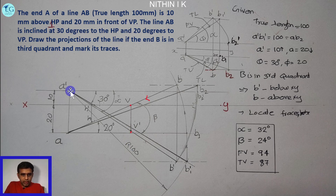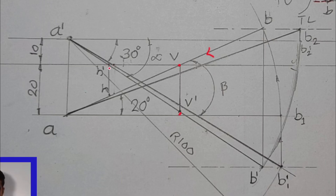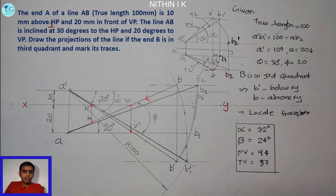A-dash, B-dash is extended to cross the XY line, giving H-dash. This point is H-dash. H-dash corresponds to the horizontal trace H. Then project down to the top view line A-B2 to get point H. Dimension is now complete.